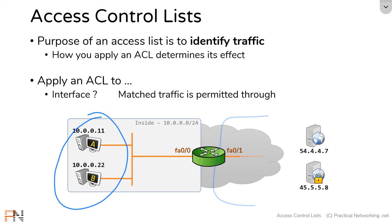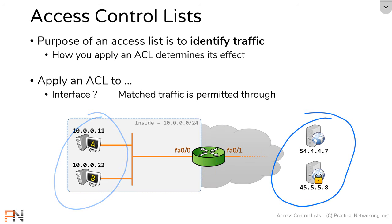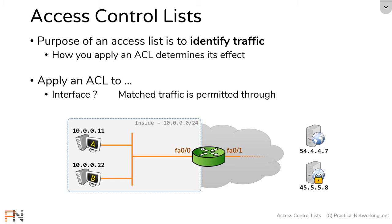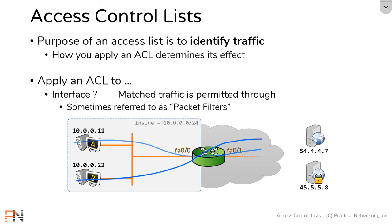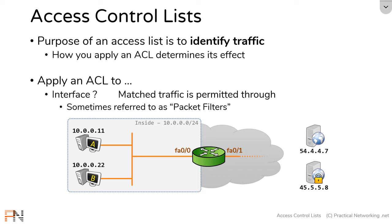We have a couple of hosts on the inside segment and a couple of hosts on the internet. When you apply an access list to an interface, that access list is sometimes referred to as a packet filter. The idea is that any packets being sent out by your inside hosts are going to be matched against this access list to determine whether the router permits or denies those packets.